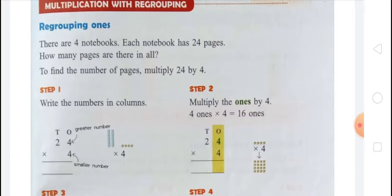In step one, we have to write the numbers in columns, with the greater number on the upper side and the smaller number on the lower side. In step two, we multiply the ones by 4. Four ones multiplied by 4 equals 16 ones.